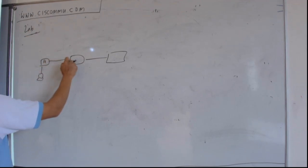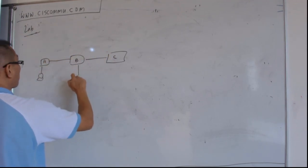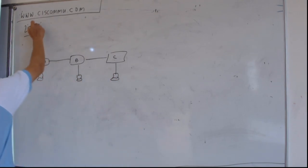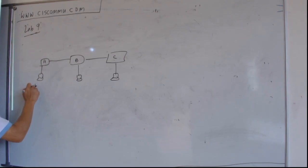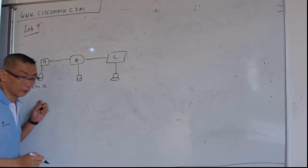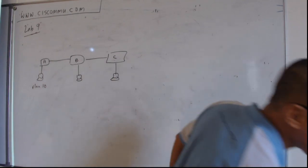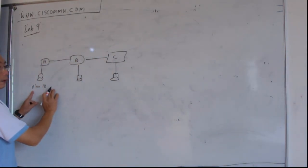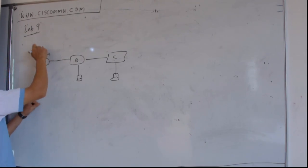Let's say this A, B, C. Okay, suppose this is in VLAN 10. This PC is in VLAN 10. VLAN 10.